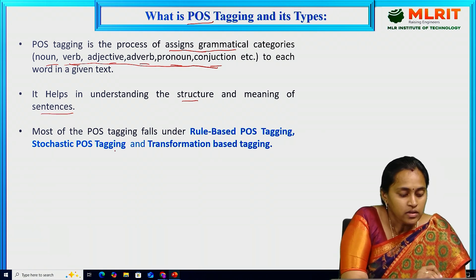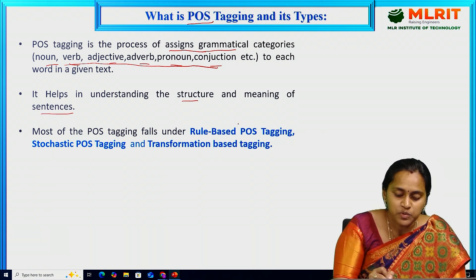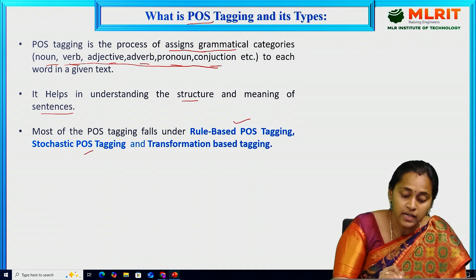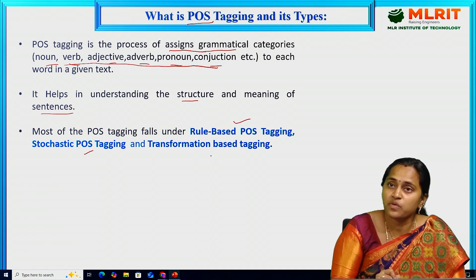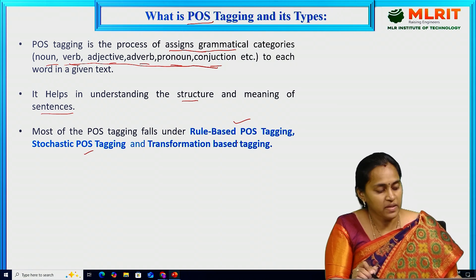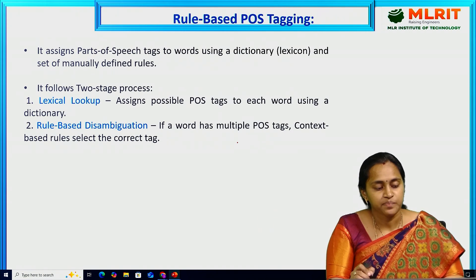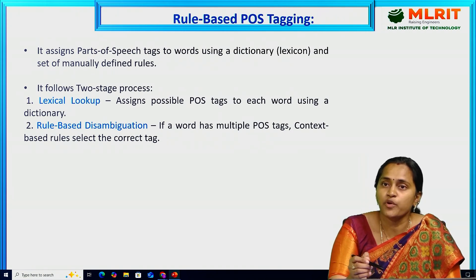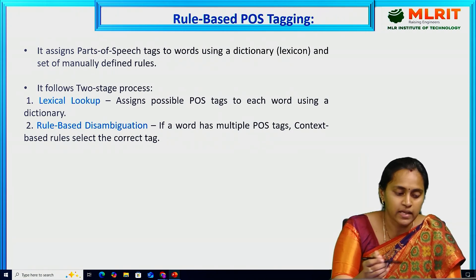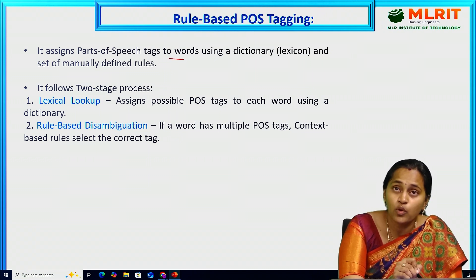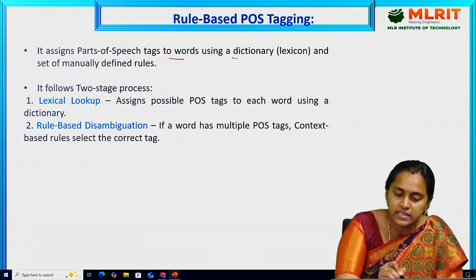There are three types of POS tagging: rule-based POS tagging, stochastic POS tagging, and transformation-based POS tagging. Let's see the first one — rule-based POS tagging. It assigns the parts of speech tags to words using a dictionary.